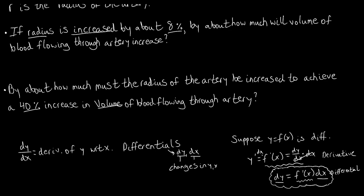Since we're dealing with percents in our questions, we need to incorporate relative change into our calculations. For example, if the radius is increased by about 8%, the original radius is at 100%, which equals 1. The new radius is at 108% or 1.08. So we have 1.08 minus 1, giving an absolute change of 0.08. Dividing by the original value of 1 and multiplying by 100 gives us the 8% relative change.